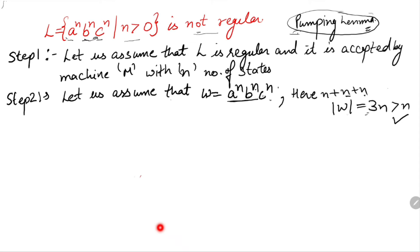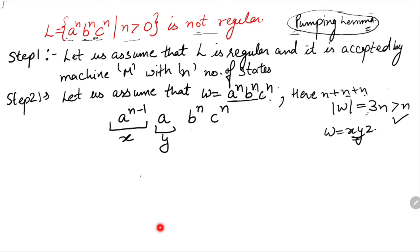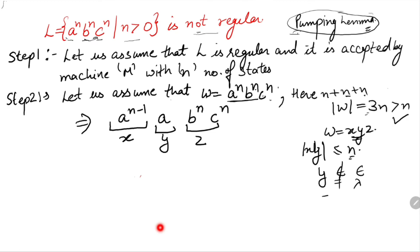In the next step we write w in the form x, y, and z — we divide the string into x, y, and z. We do it like this: x equals a raised to the power n minus 1, y equals a, and z equals b raised to the power n, c raised to the power n. The conditions require that the length of xy is less than or equal to n, y should not be equal to epsilon (lambda), and there is no restriction on z. All three conditions are satisfied here.